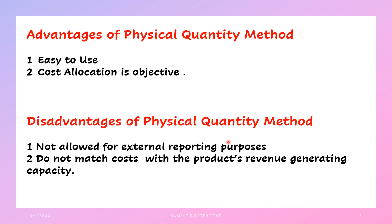The disadvantages of the physical quantity method: first, it is not allowed for external reporting purposes. Second, this method does not match costs with the product's revenue-generating capacity, because you're only looking at how much quantity of each product is produced — not the value of the goods separated at the split-off point. High-value or low-value goods receive the same treatment. So if very low-value goods are produced in high numbers, more cost gets allocated to them, giving them more importance. That is a disadvantage of the physical unit method.